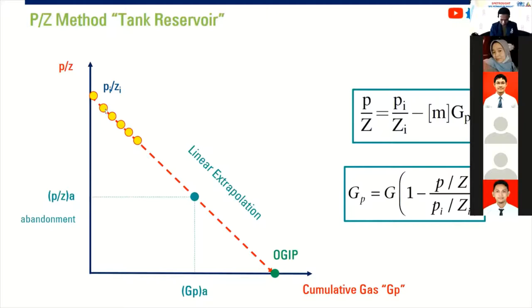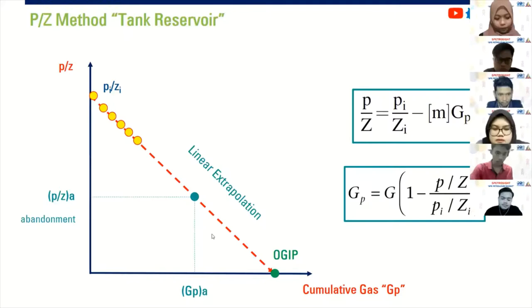This is true for volumetric reservoir. So after we obtain the linear relationship, we can simply forecast it. We do linear extrapolation down to zero. And by doing that, we have OGIP, which is original gas in place. How to calculate our ultimate recovery? We can do that by just assuming our abandonment pressure. If you define already your abandonment pressure, you can just draw on your line here and then go down. You get GP in abandonment time.